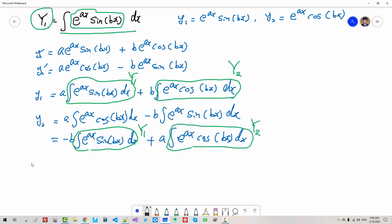Now we form a matrix like this: y₁, y₂ equals matrix with A, B, minus B, A times y₁, y₂. We formed the matrix.